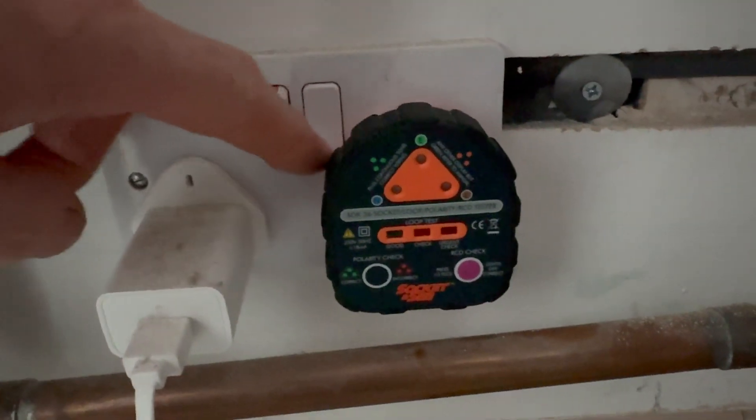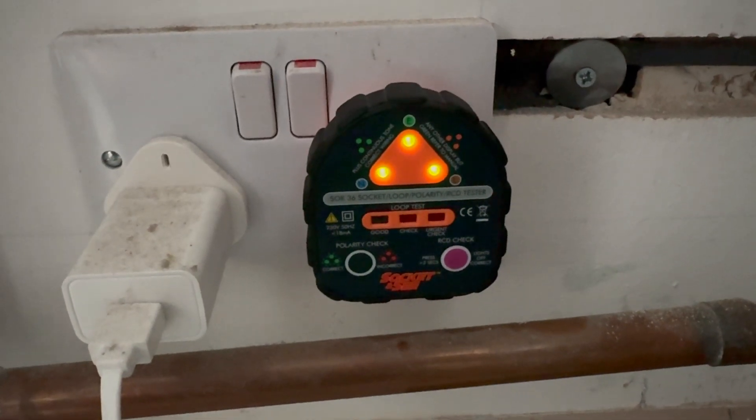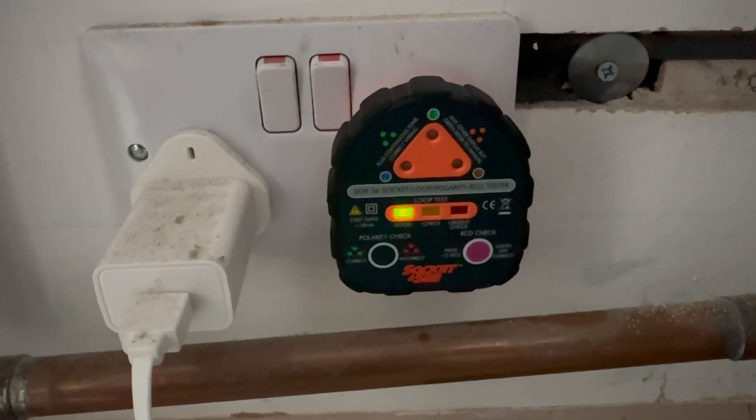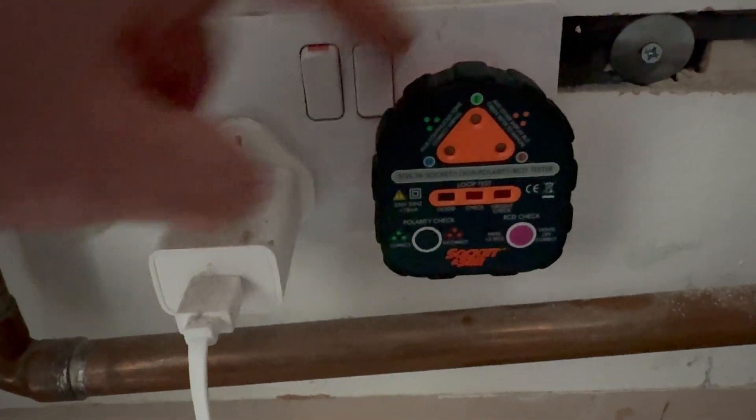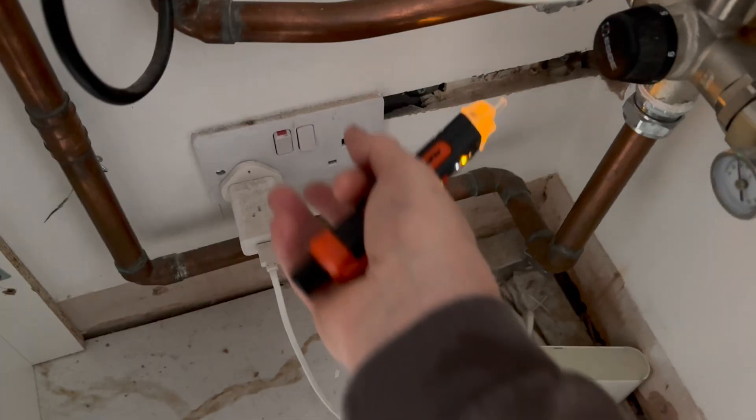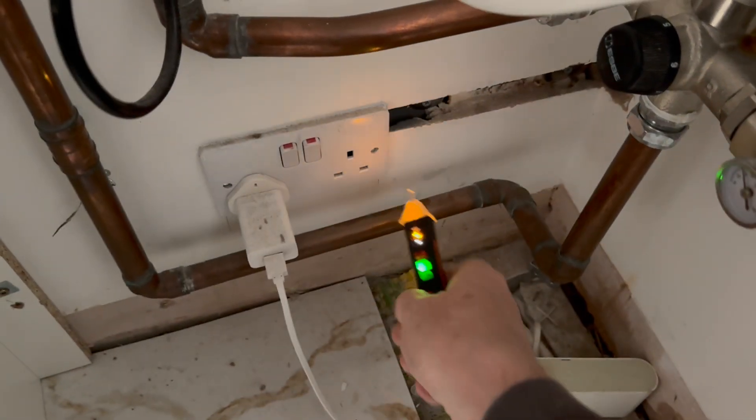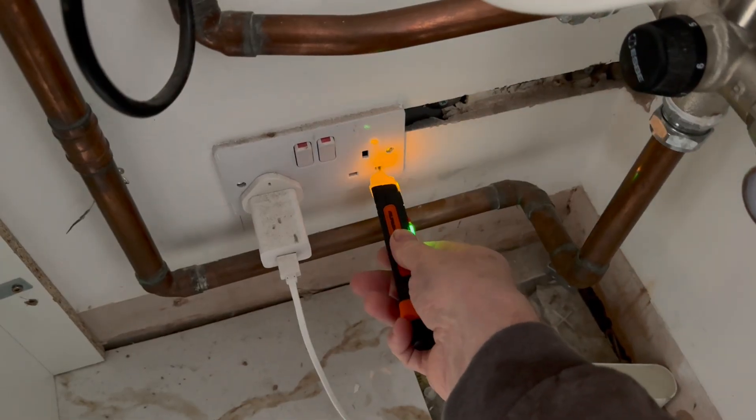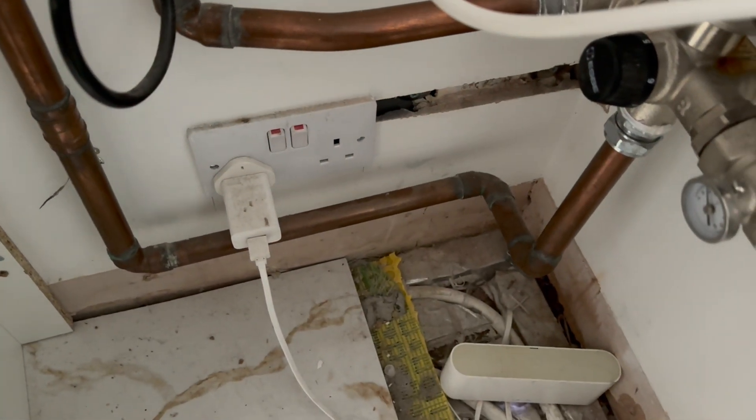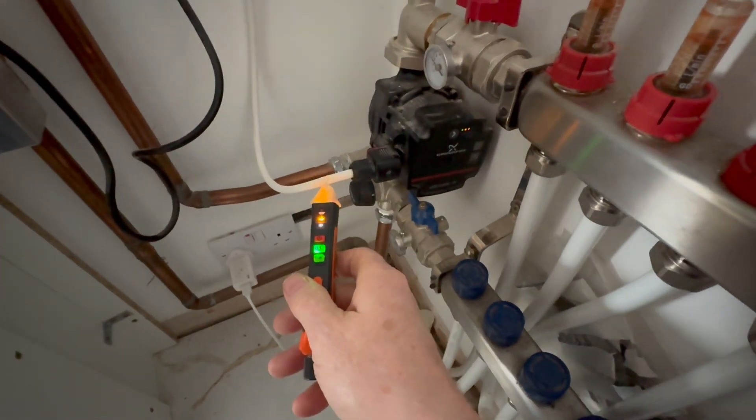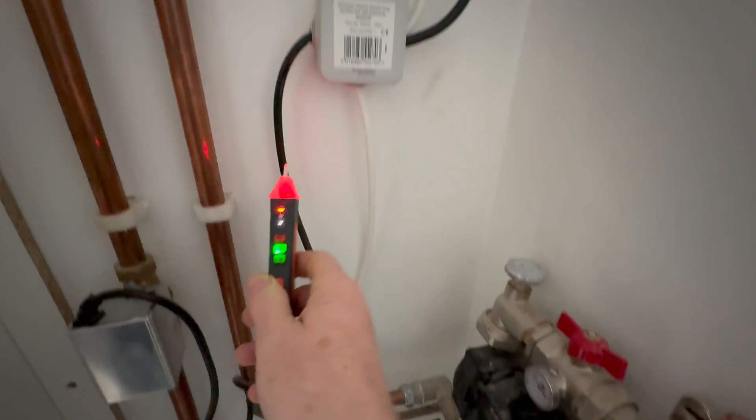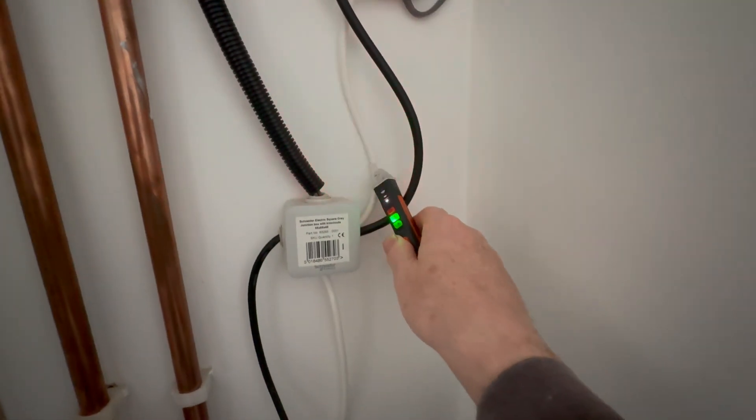I'm just using my socket and C socket tester to make sure I've got polarity and earth loop impedance, which I have. Now I know this socket is live, I'm going to prove my non-contact false indicator to see if the power is actually on to all the wires. The pump's running, we've got power to the zone valve, power up to the stats, and power to the boiler.